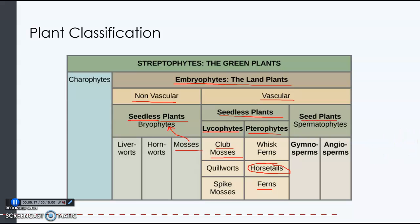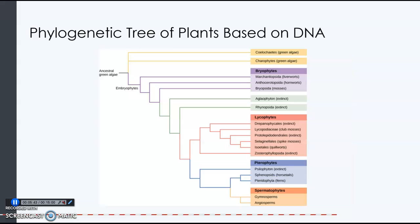Then we have the seed plants, or spermatophytes. The gymnosperms — gymnosperm means naked seeds — include the conifers, pine trees, and cone-bearing plants. The angiosperms are the covered or protected seeds, and they include the flowering plants. So these are the groups of plants and the way they are classified.